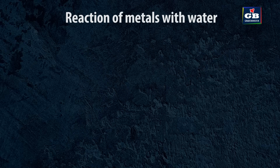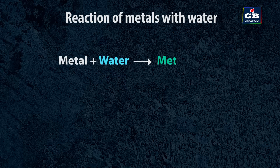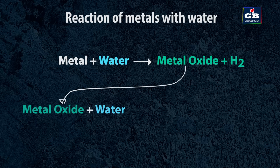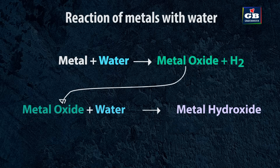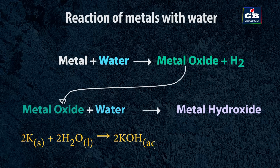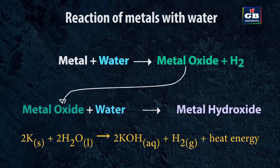Reaction of metals with water: metals react with water and produce metal oxide plus hydrogen. This metal oxide further dissolves in water and produces metal hydroxide. Metal + water → metal oxide + hydrogen; metal oxide + water → metal hydroxide. For example, potassium + water → potassium hydroxide + hydrogen + heat energy.